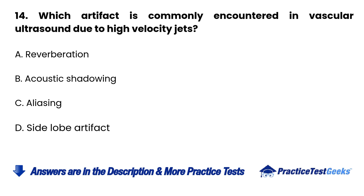Question 14. Which artifact is commonly encountered in vascular ultrasound due to high-velocity jets? A. Reverberation. B. Acoustic shadowing. C. Aliasing. D. Side-lobe artifact.